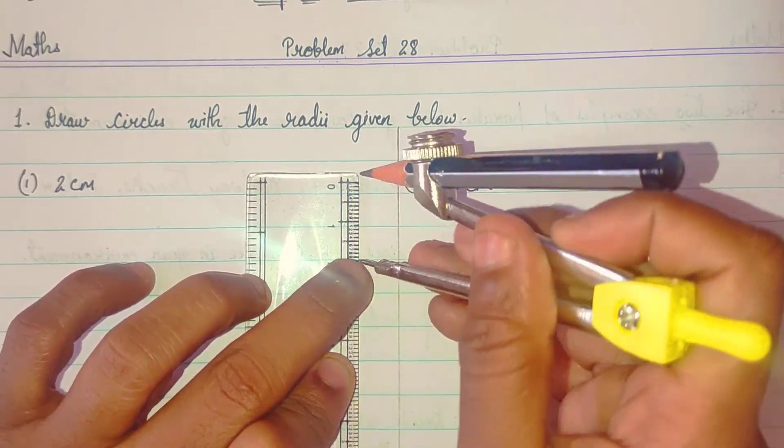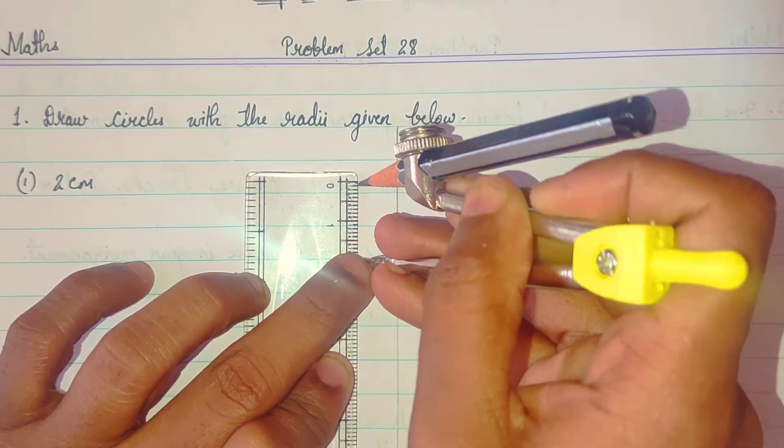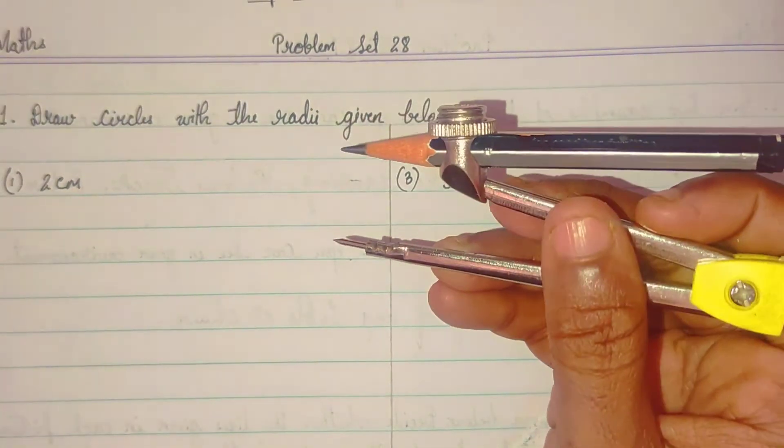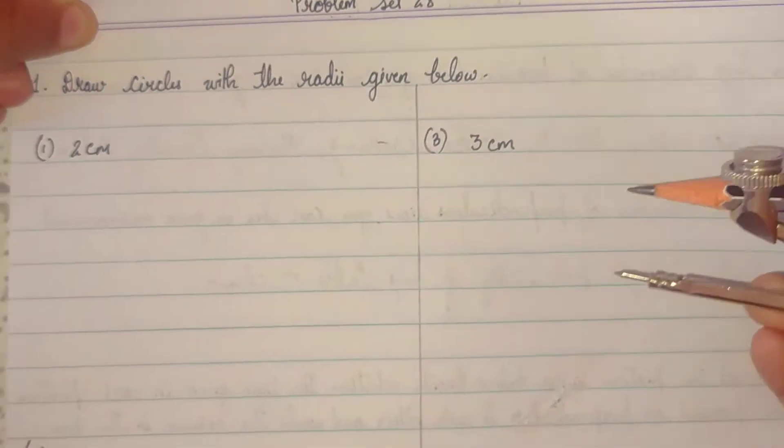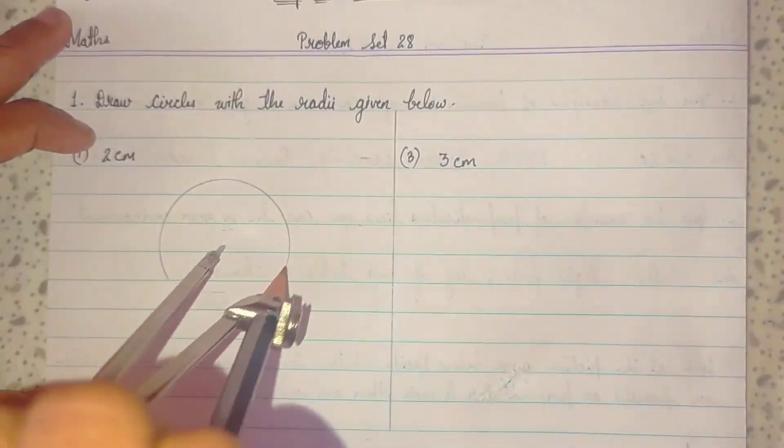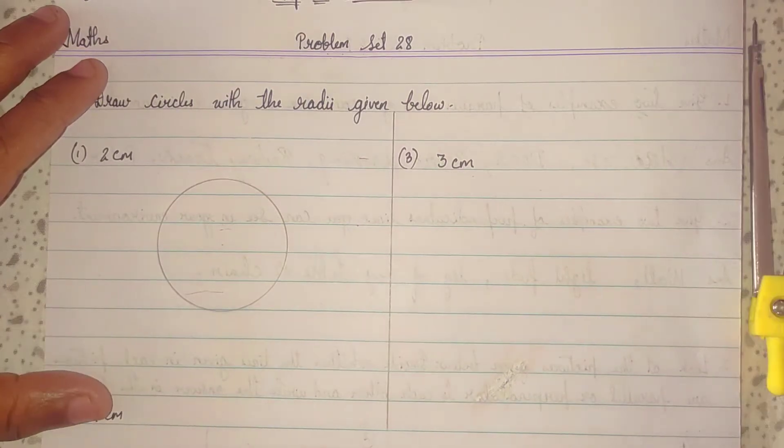Dot pe isko rakho. 2 centimeter ko, wo dot ke pas leke aaye. So, ye ho gaya 2. See, this is your 2 centimeter. Now, what you just simply have, simply this is your circle.